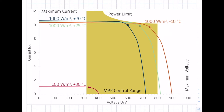We also check what happens under different conditions. The blue curve is at 1000 watts per square meter irradiance and a module temperature of plus 70 degrees Celsius — a typical situation on a hot summer day. As module temperature increases, the voltage of the PV modules decreases, and the MPP also decreases. But the MPP must still be within the yellow marked MPP control range of the inverter.